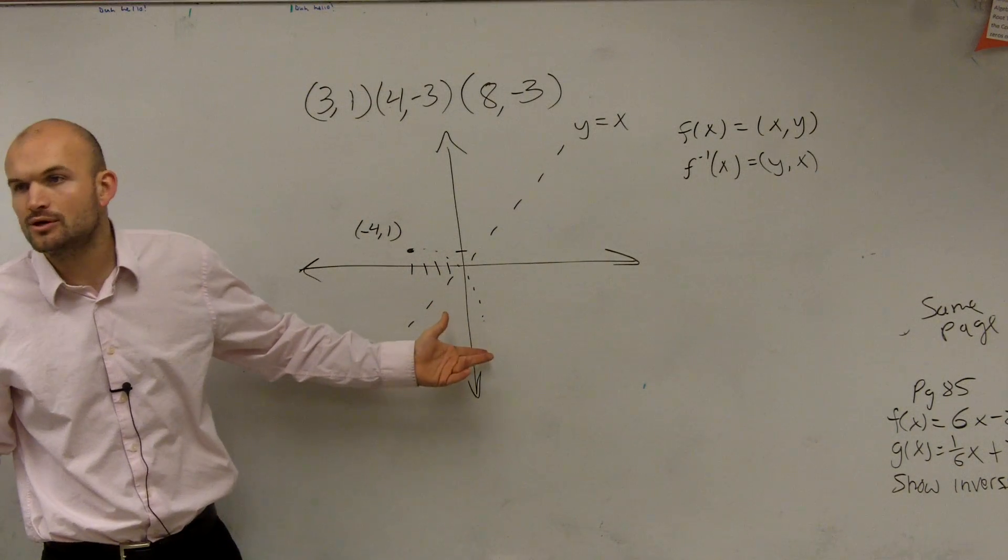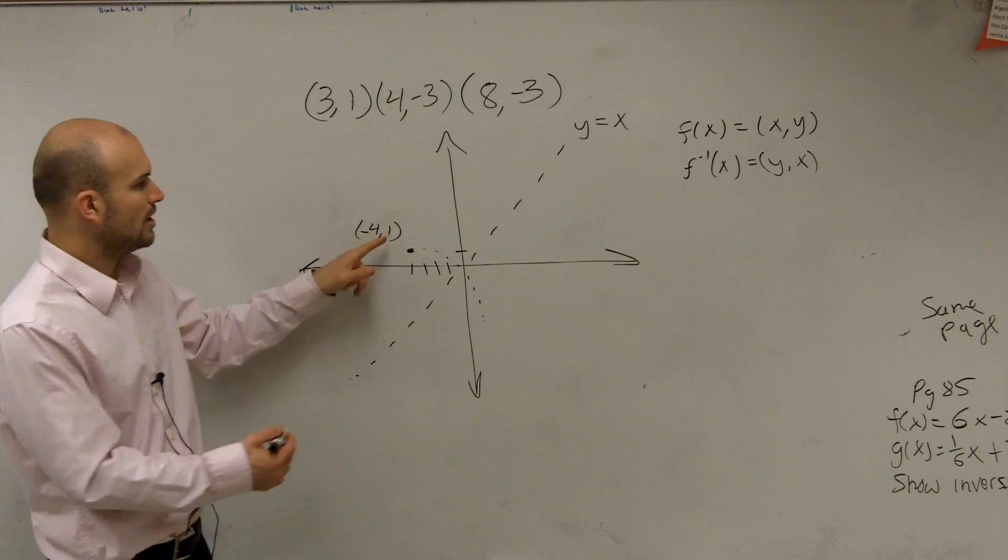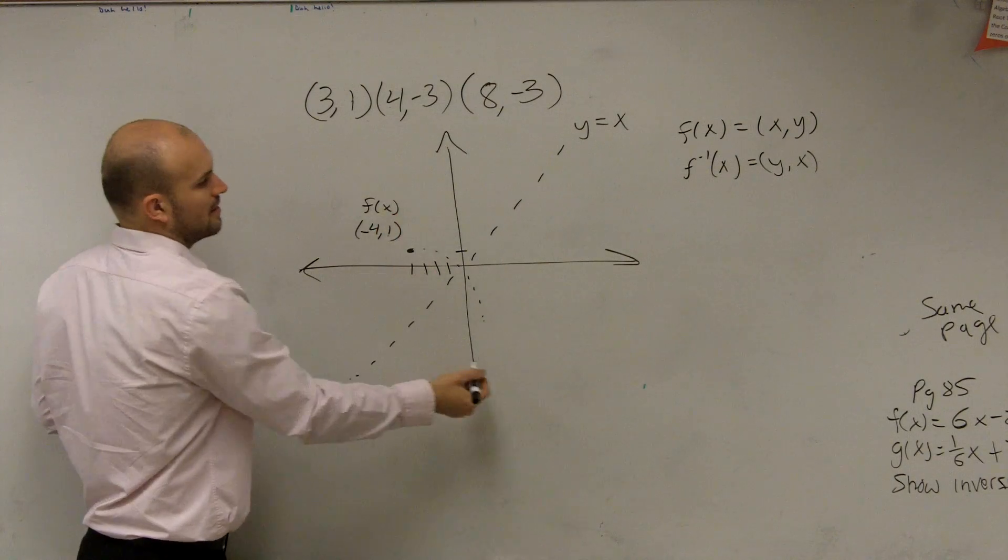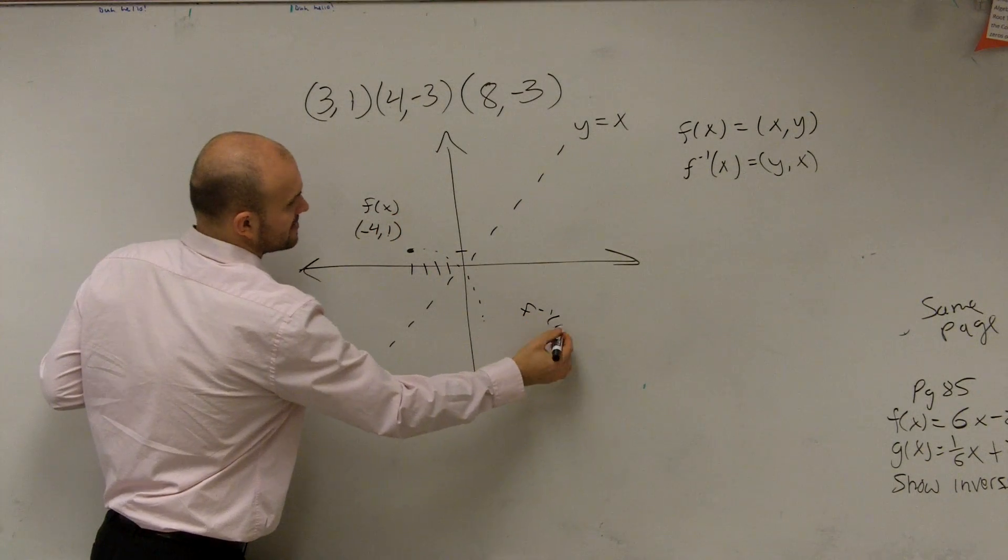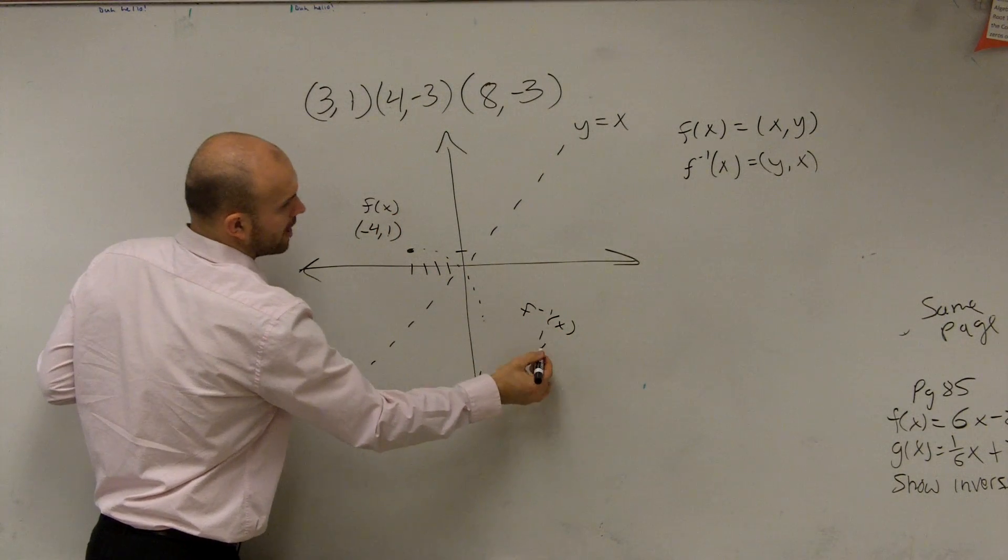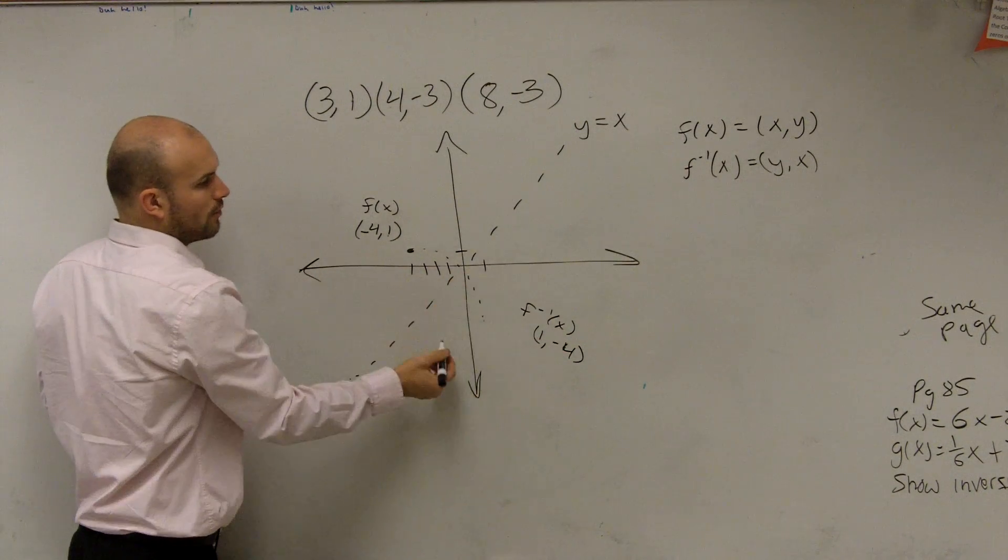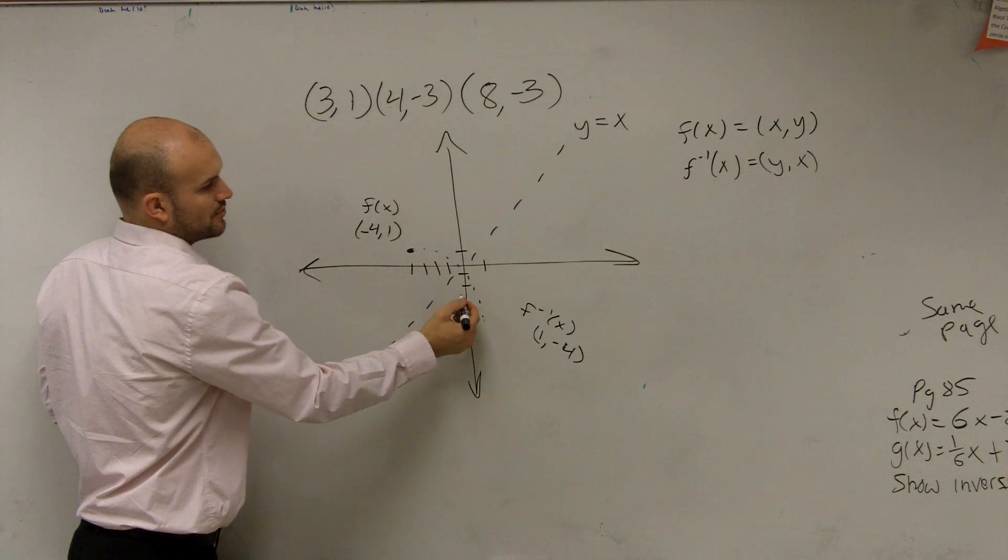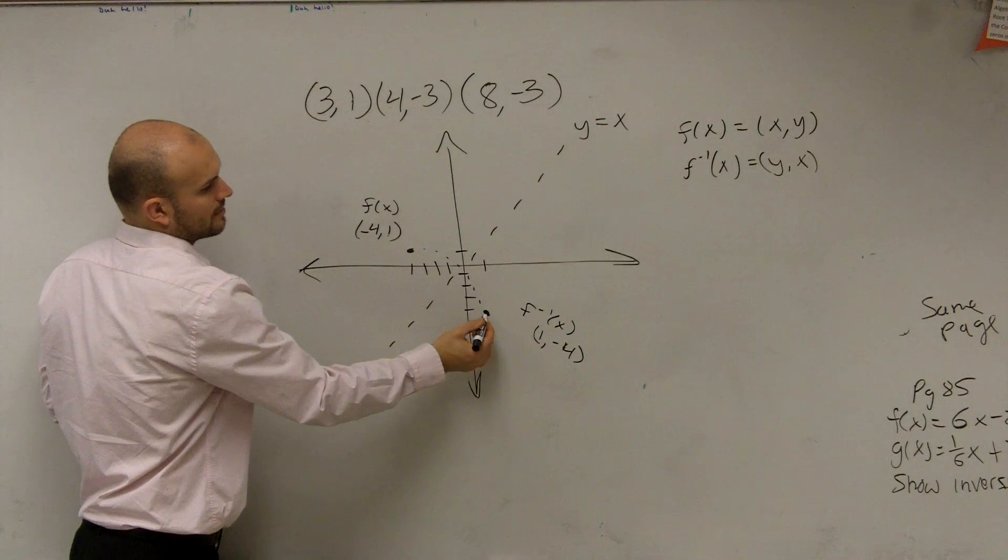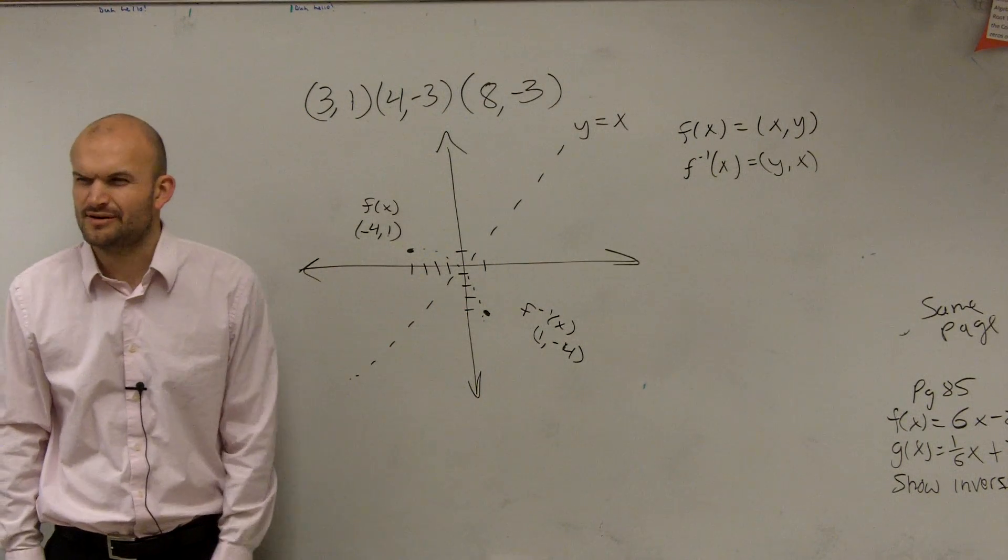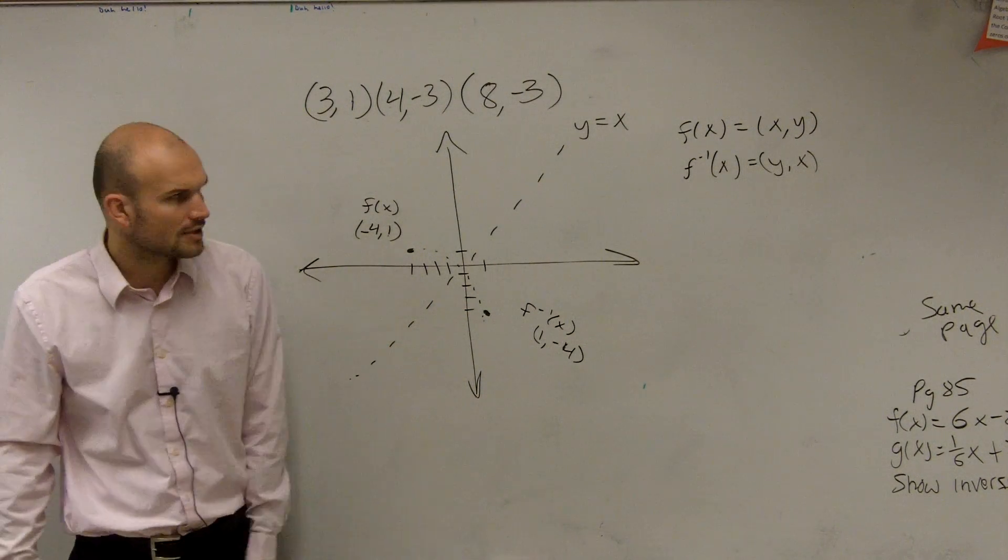Well, how do we know exactly where it's going to be? Well, if here is f of x, then f inverse of x is going to be 1 comma negative 4. So I go over 1, down negative 4. 1, 2, 3, 4. And you guys can see that's pretty close to my estimation. Does everybody kind of see how that is? OK.